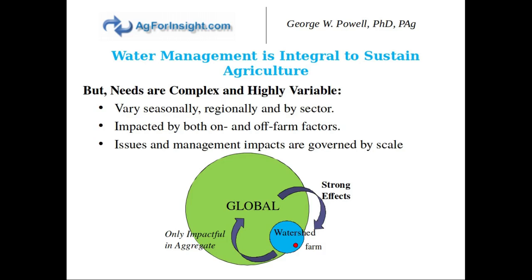These issues and management impacts are governed by scale. What's going on at the farm level is strongly influenced by what's happening in the watershed, which in turn is strongly influenced by global patterns — there are strong effects as you move from global down to the farm level. In reverse, changes at the farm level are really localized and only become impactful if a lot of farms are experiencing those changes, then you would see watershed-level changes, and in turn many watershed changes have to occur for there to be global impacts.